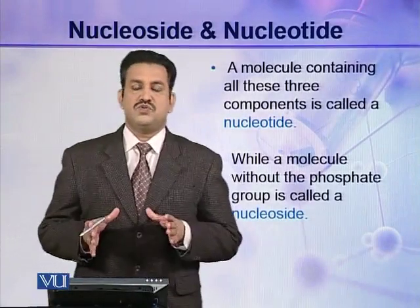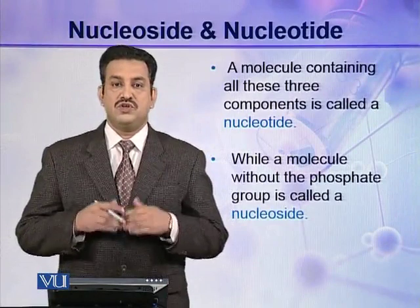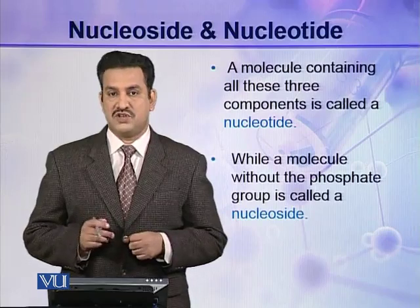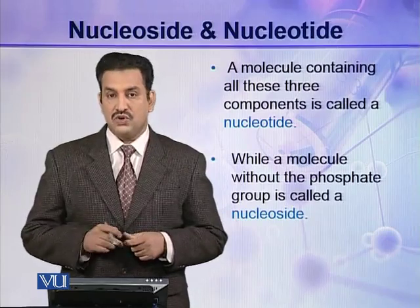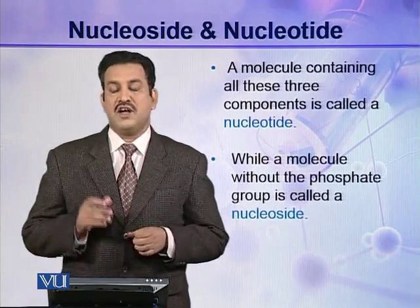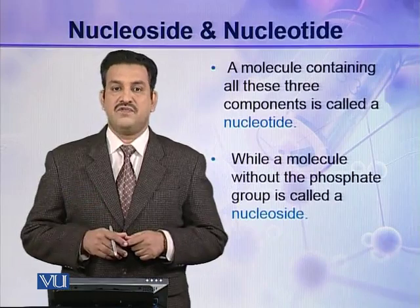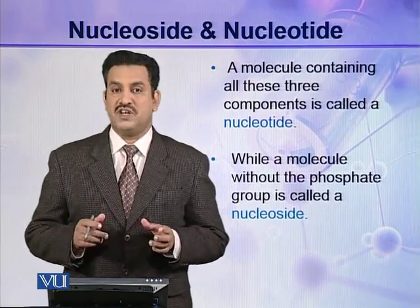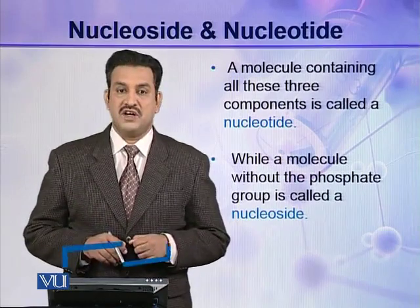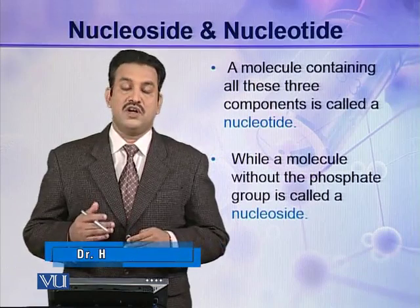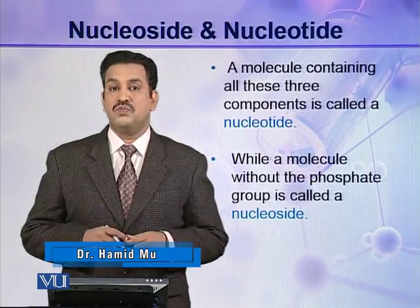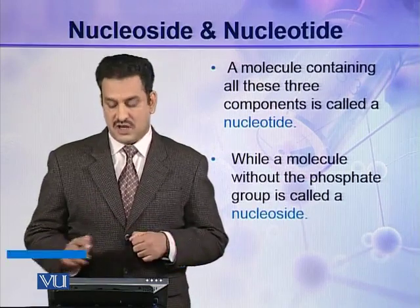Dear students, in this module I am going to introduce to you two new types of molecules: nucleosides and nucleotides. A molecule containing all three components — a pentose sugar, a nitrogenous base, and a phosphoric acid — is termed a nucleotide, while a molecule without a phosphate group is termed a nucleoside. In other words, a nucleotide with its phosphate group removed is called a nucleoside.